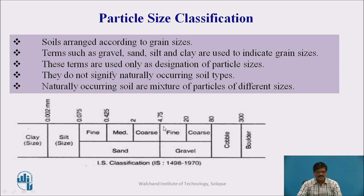Particles having a size more than 4.75 mm up to 80 mm are called gravel. Within gravel, there are two categories: fine gravel and coarse gravel. Beyond 80 mm up to 300 mm, the particles are called cobbles, and beyond 300 mm it is called boulder.